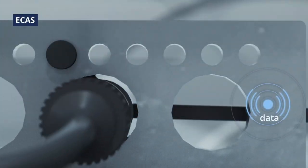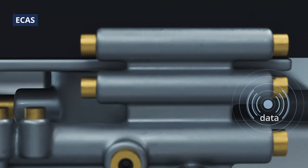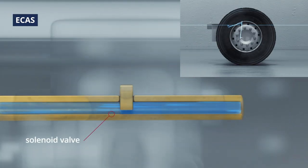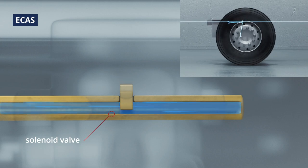ECAS, on the other hand, works with an electronic height sensor that sends real-time data to the trailer modulator. This unit automatically calculates whether the pressure in the bellows needs to be regulated, which ensures a more efficient suspension.